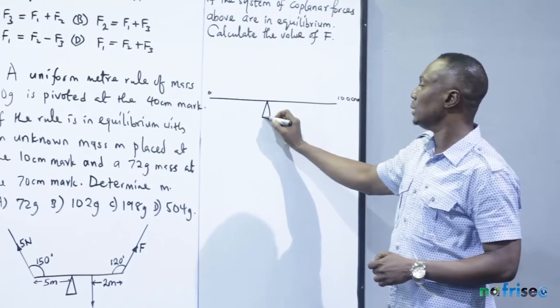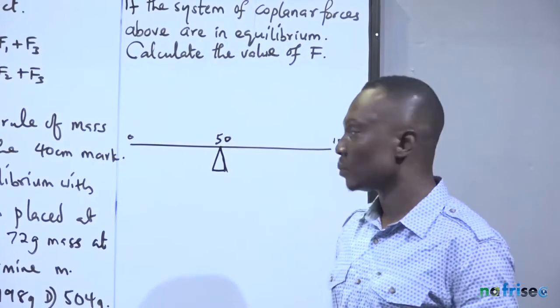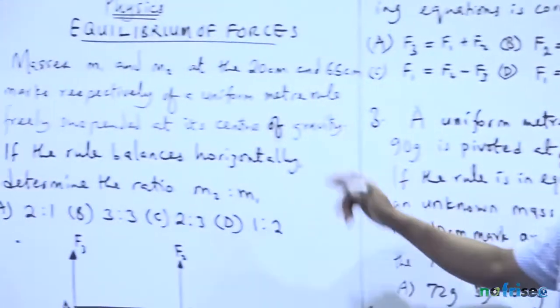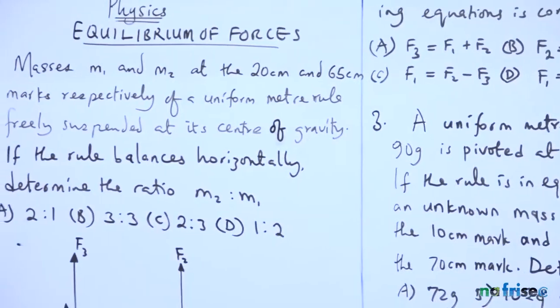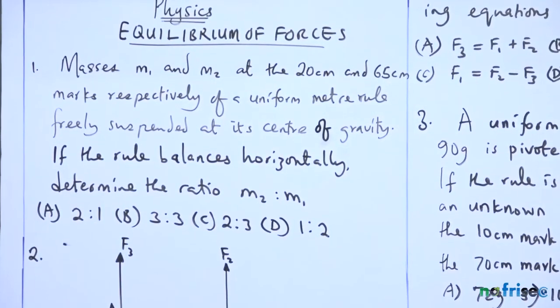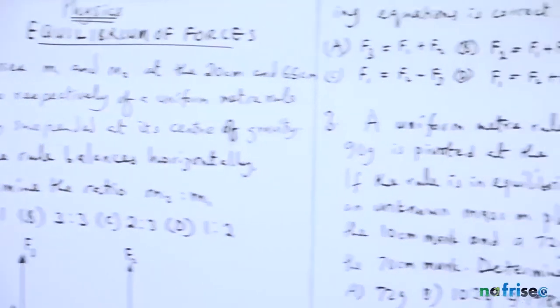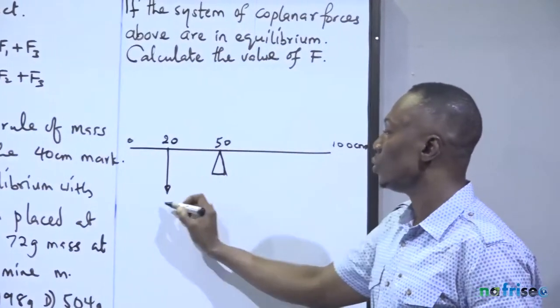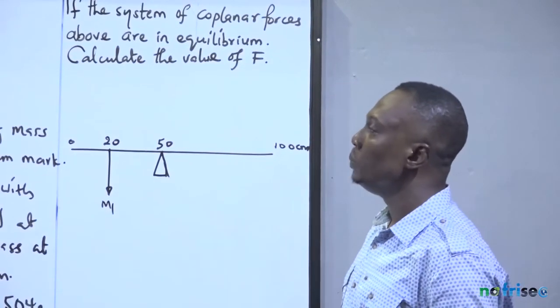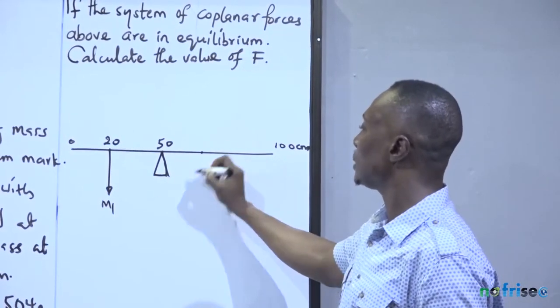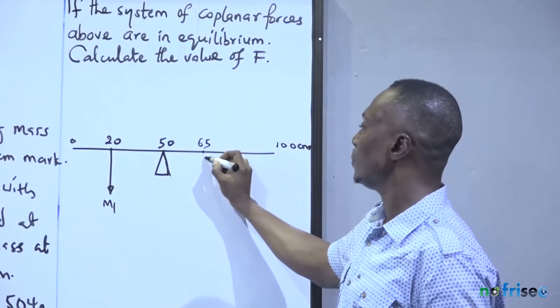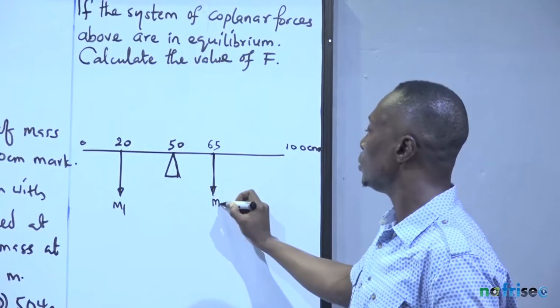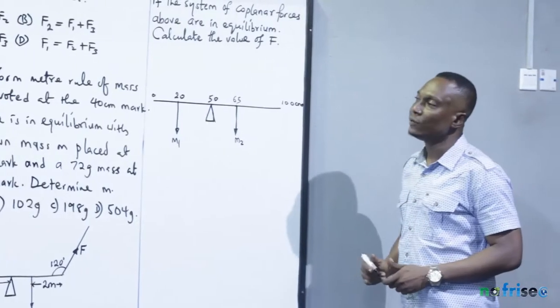We have masses M1 and M2 placed at the 20 centimeter mark and 65 centimeter mark respectively. M1 is at the 20 centimeter mark on this side of the meter ruler, and M2 will be at the 65 centimeter mark after 50. Now the question is for us to determine the ratio of M2 to M1.